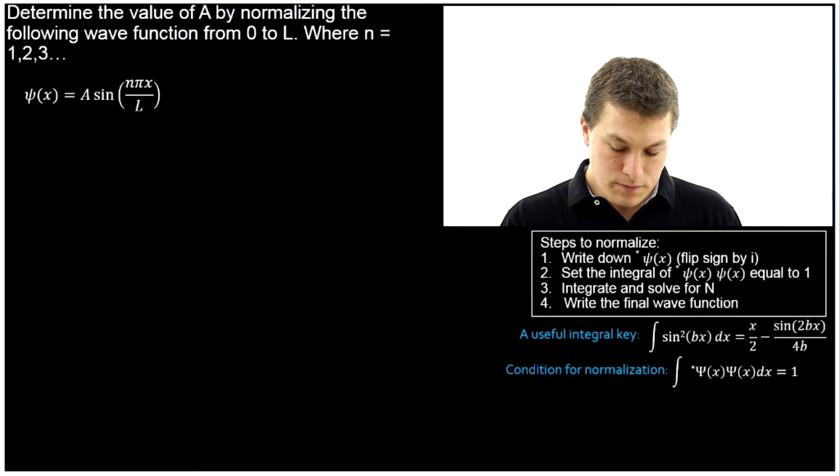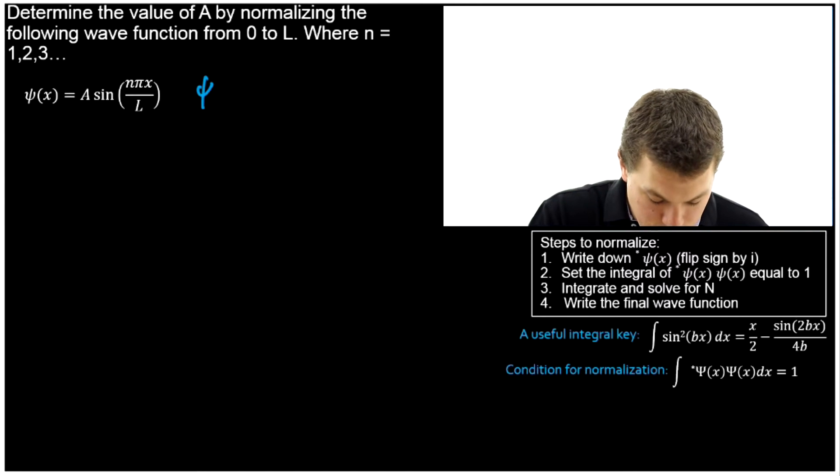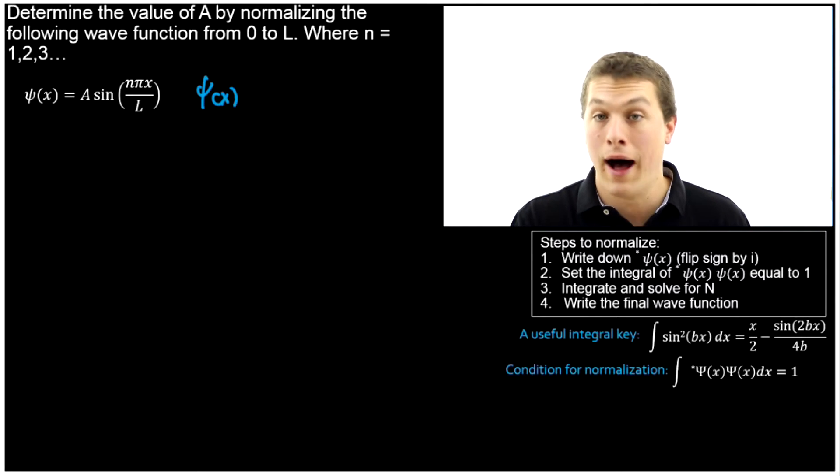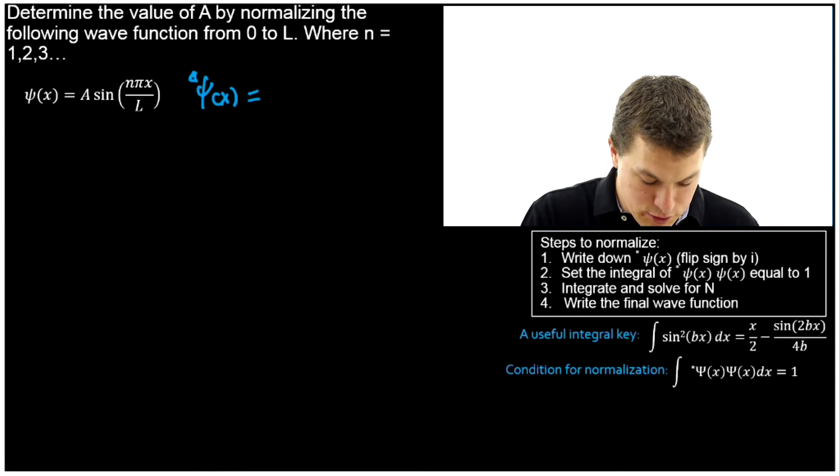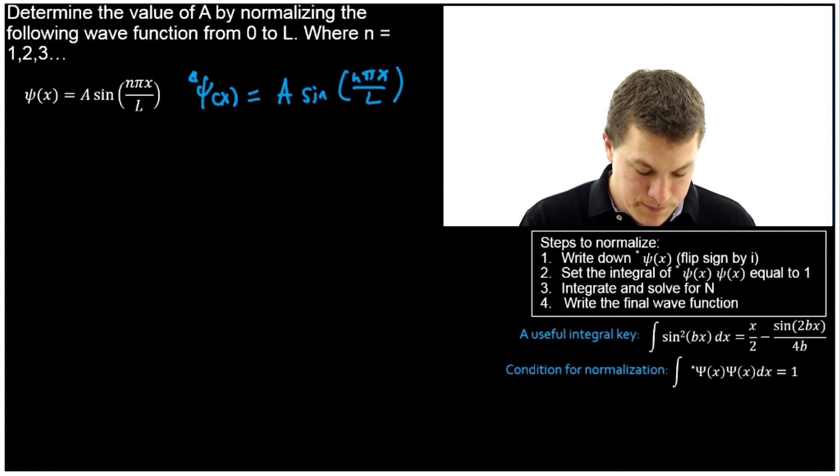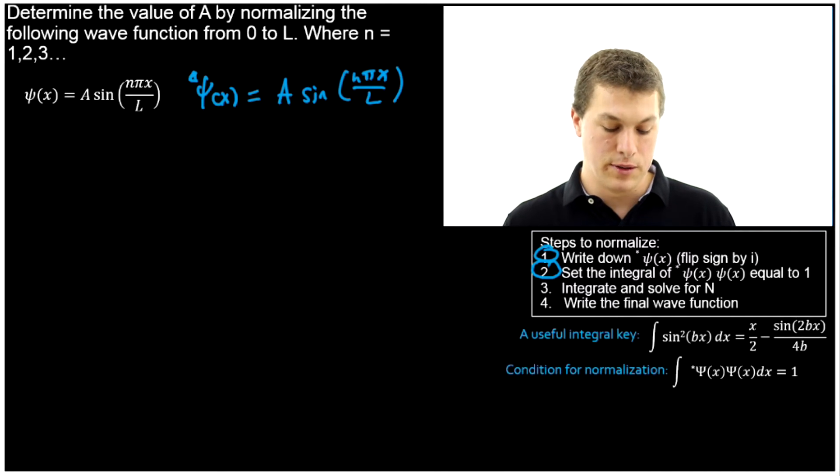To normalize it, what we're going to do is first write down the complex conjugate. That turns out to be a breeze in this case. The complex conjugate of this guy, there's no i anywhere, so the complex conjugate is exactly the same as our original wave function: A sin(nπx/L). Then we're going to go ahead and set the integral equal to 1. So we've done step 1, now we're going to do step 2.